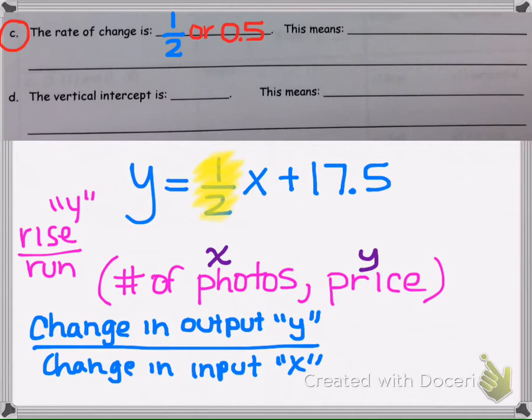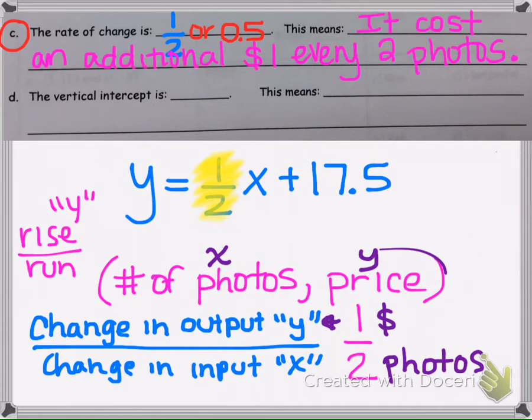So that's how I remember that I'm going to find the change in the output, the y in my equation here. I'm going to take the 1 half, if I'm trying to explain what the 1 and the 2 represent. The 1 represents your output variable, which is price. So the 1 represents price, and the 2 represents photos. We would say, it costs a dollar for every two photos. I would explain that the rate of change is 1 half, and this means it costs an additional dollar every two photos.